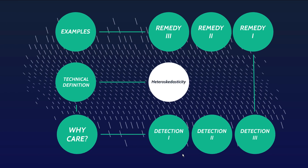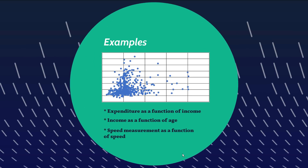Let's look at some real-world examples of heteroscedasticity. Whenever you look at expenditure as a function of income, you'll tend to get heteroscedasticity — as income increases it allows for extra expenditure but doesn't necessitate it. Income as a function of age might also exhibit that heteroscedastic flavor: 20 and 21-year-olds can only earn so much without experience, but as age increases some people earn a lot more while others earn less, so the variance of income increases with age.